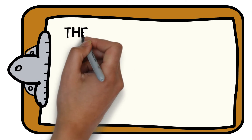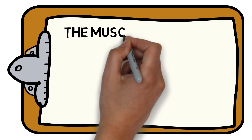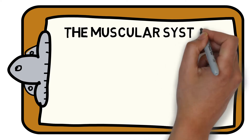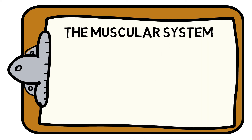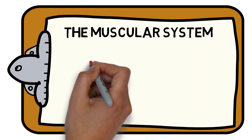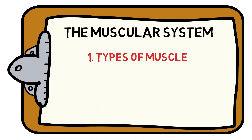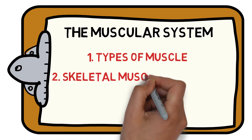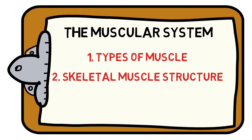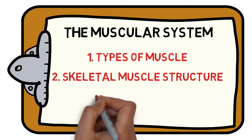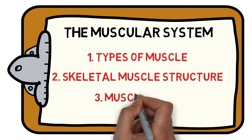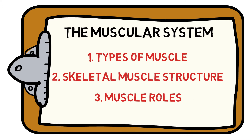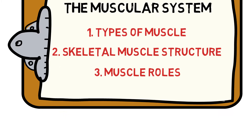Welcome to the Sports Science Hub's guide to everything you need to know about the fundamentals of the muscular system. We will help you understand the different types of muscles we have throughout the body, the structural makeup of skeletal muscle, and the various roles a muscle can perform depending on the demands of the activity. Let's get started.